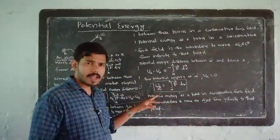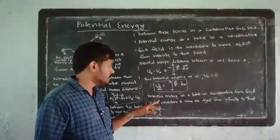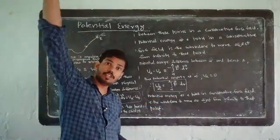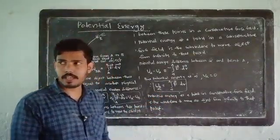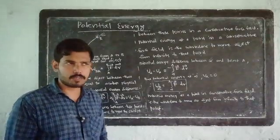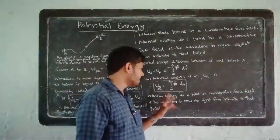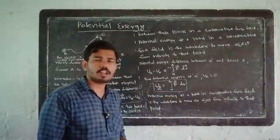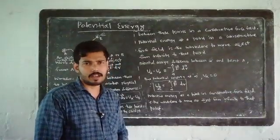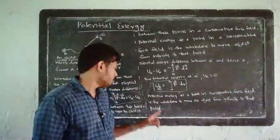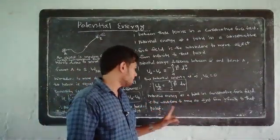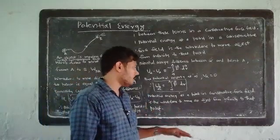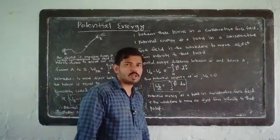Potential energy at a point is the work done to move an object from infinity to that point. So the work done to move an object from infinity to that point equals the potential energy at that point. Potential energy at a point in a conservative force field is the work done to move an object from infinity to that point.